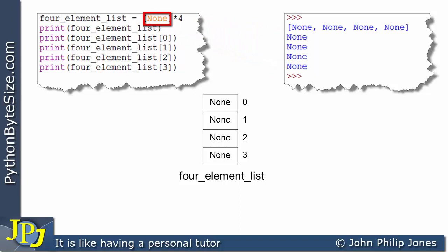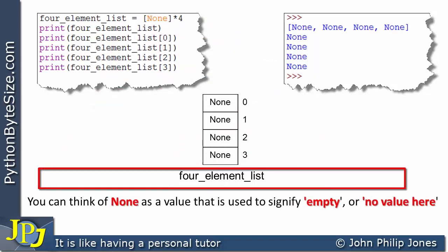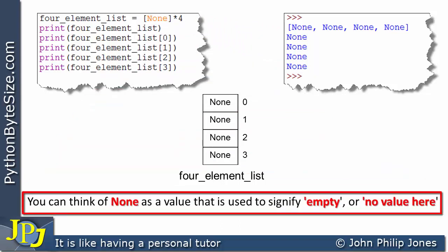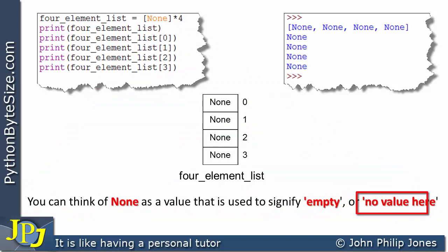Now here you can see I've used this word none. You can think of none as a value that is used to signify empty or no value here. So if I look to this element, you can see this stores none. That is implying that the list is empty of any values that we might want to use or there is no value here.